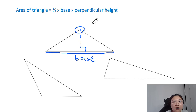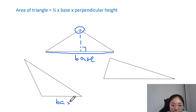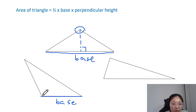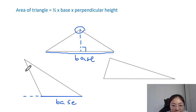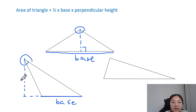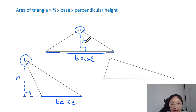That height line must reach the opposite vertex of the triangle. Now let's look at another triangle that is a little bit more challenging. Here we have the base, but we can't draw a perpendicular line that easily reaches the opposite point. What we do is extend the base, and then we can connect the perpendicular height toward the opposite vertex. This height is 90 degrees to the base.